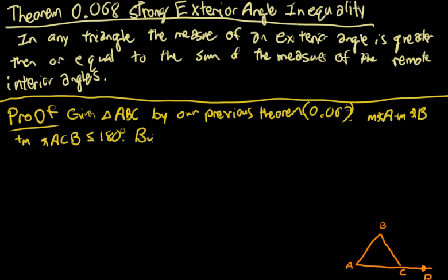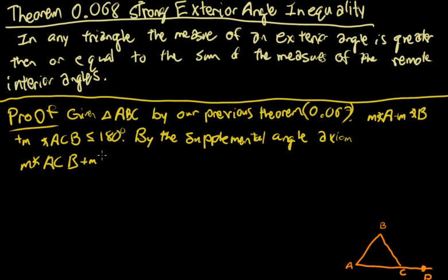By the Supplemental Angle Axiom, measure of angle ACB plus measure of angle BCD equals 180 degrees.